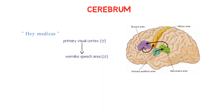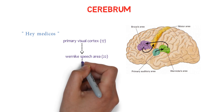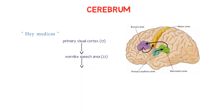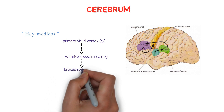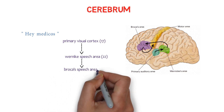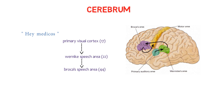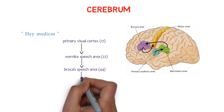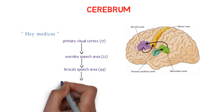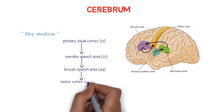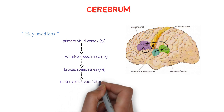Wernicke's area is a region of the brain important for language development. It is located in the temporal lobe on the left side of the brain and is responsible for the comprehension of speech. From there, signals are transported to Broca's area — area number 44 — which is related to the production of speech. Signals then transfer to the motor cortex vocalization, area number 4, and now you can speak the words 'hey medicos.'